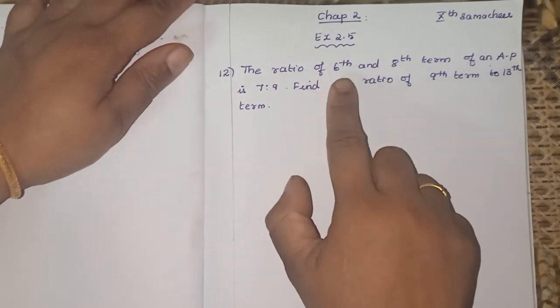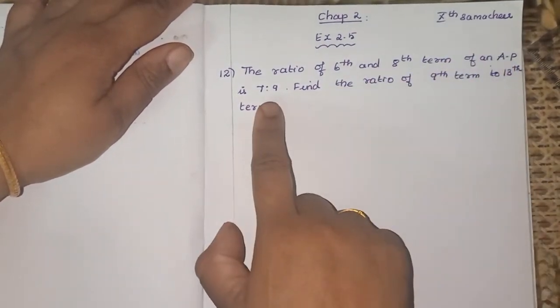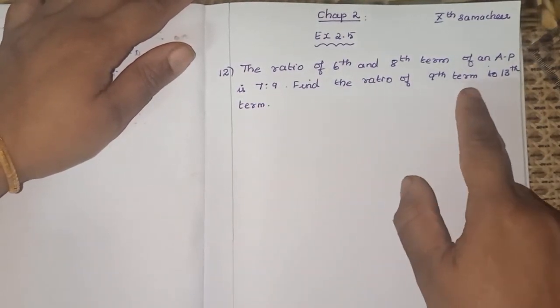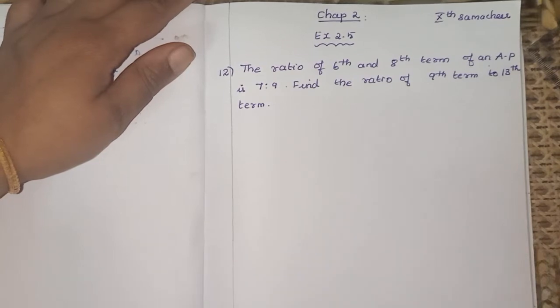It is based on arithmetic progression. The ratio of 6th and 8th term of an AP is 7 is to 9. The ratio is given. We have to find the ratio of 9th term to 13th term.